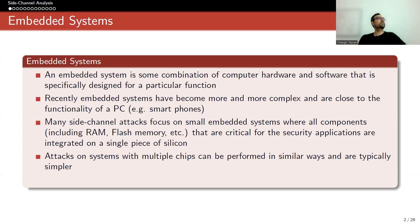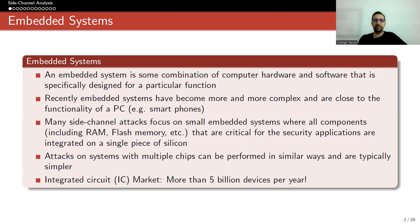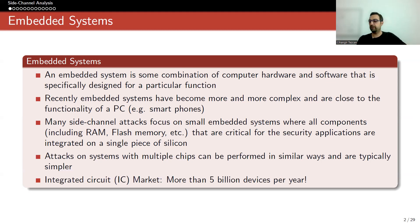Attacks on systems with multiple chips can be performed in similar ways and are typically simpler, because in some systems, chips have specific purposes. So attacking might be simpler. The integrated circuit market produces more than 5 billion devices per year. It is a huge market and not all of them have security properties.